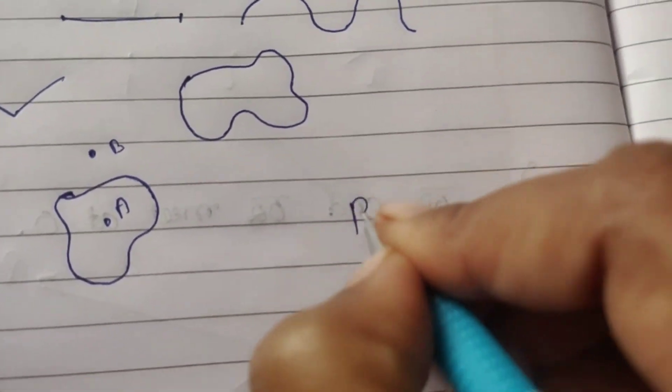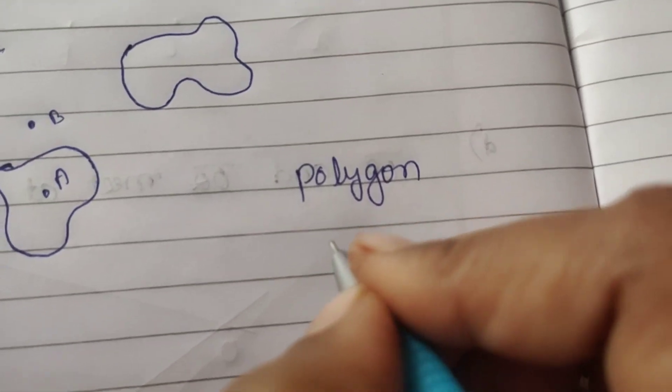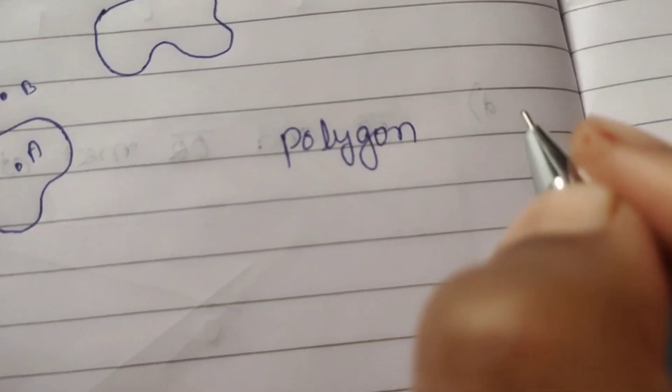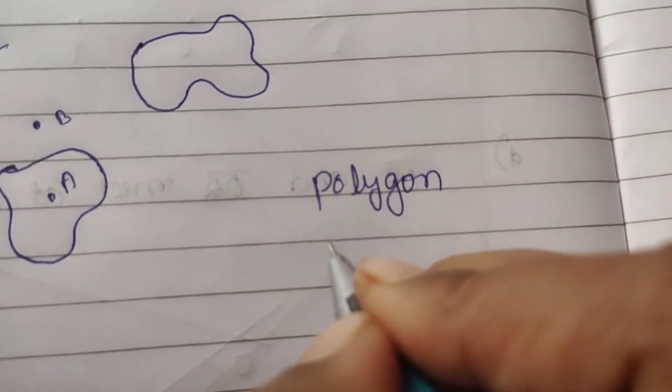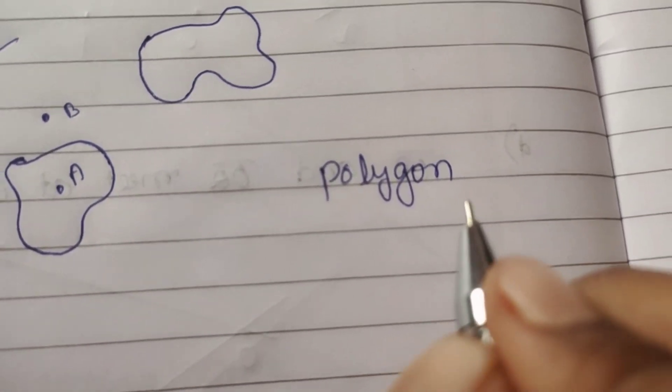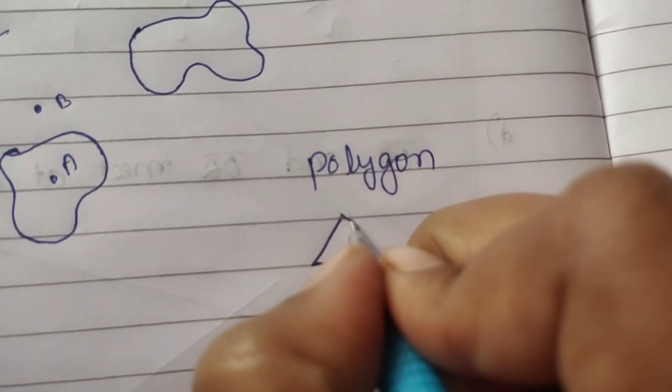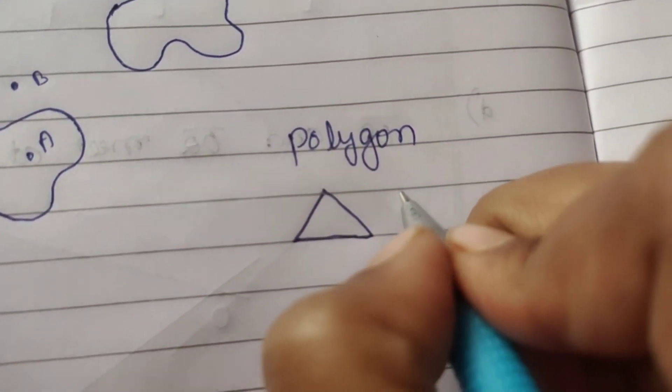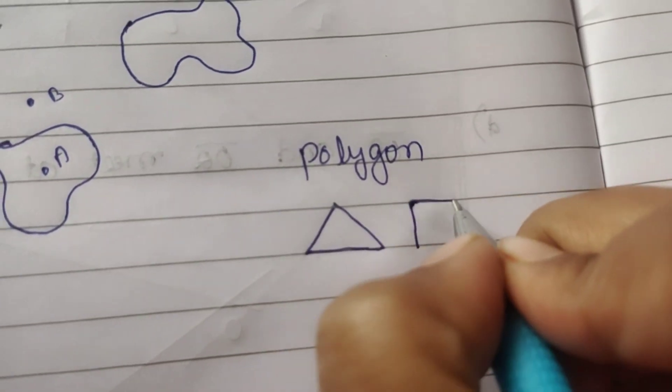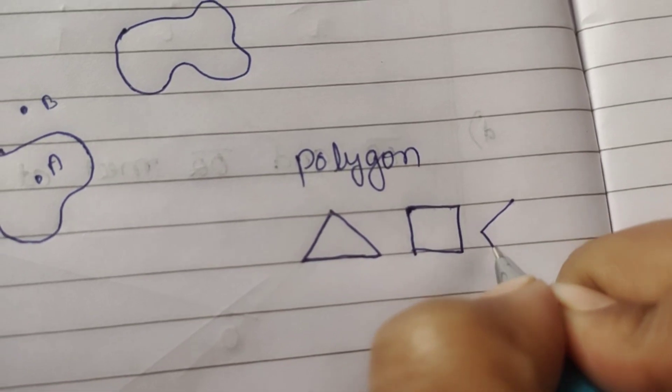Next concept: polygon. What are polygons? Polygons are figures which are entirely made up only of line segments, straight lines. For example: triangle, square, rectangle, pentagon, hexagon.